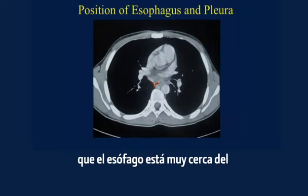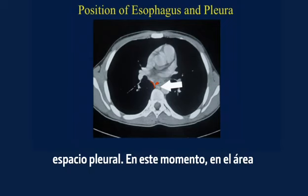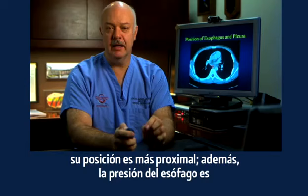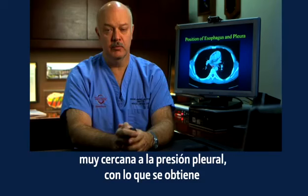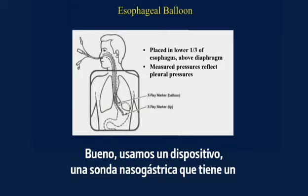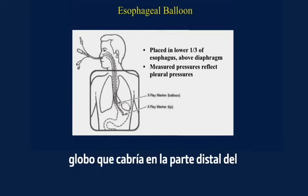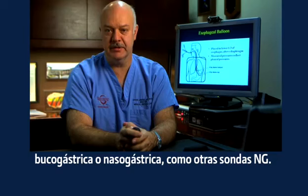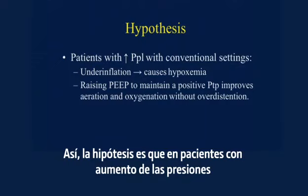Why? Because if we look at this CT scan, we will see that the esophagus is in very close proximity to the pleural space. At this point in the retrocardiac area, in about the distal third of the esophagus, is where it is most proximal, and the pressure of the esophagus is very close to the pleural pressure, which gives us the true transpulmonary pressure. We use a device that has a nasogastric tube with a balloon that fits in the distal part of the esophagus, placed either orogastrically or nasogastrically, like any other NG tube.